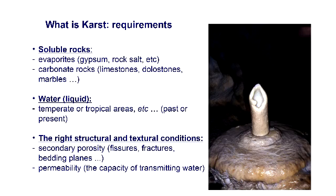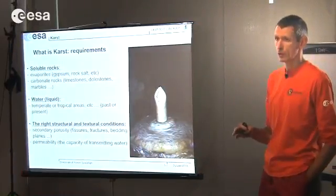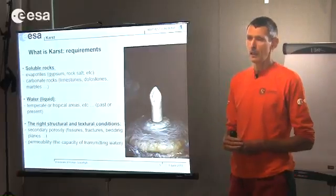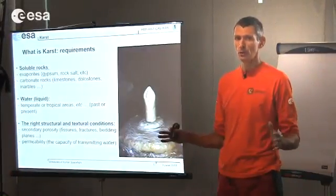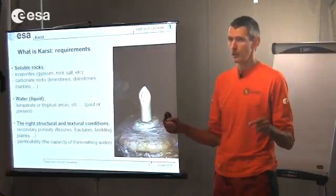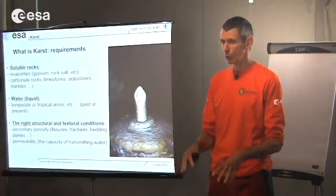This means we need an area where we have rainfall. In desert areas today, karst processes won't be active, and also not in Antarctica because it's all ice. But you have to think in terms of geological time — 10,000 years ago it may have rained in the Sahara, so we can find caves there as well. We also need the right conditions of the rock itself, because dissolution happens at the surface but also underground. We need a rock that is slightly fractured or has bedding planes that allow water to penetrate and start dissolving from the beginning.